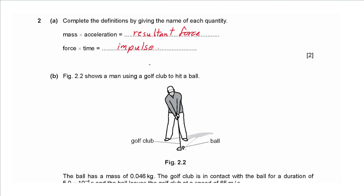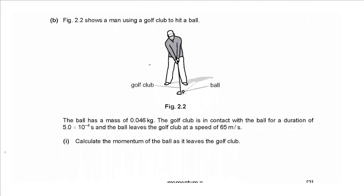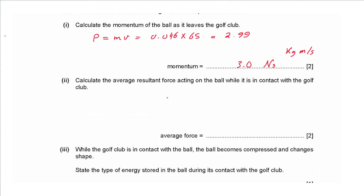Part b: figure 2.2 shows a man using a golf club to hit a ball. The ball has a mass of 0.046 kg, the golf club is in contact with the ball for 5.0 × 10⁻⁴ seconds, and the ball leaves at 65 m/s. Calculate the momentum of the ball as it leaves. Momentum equals mass multiplied by velocity: 0.046 × 65 = 2.99 newton seconds, approximately 3.0 N·s (or kg·m/s).